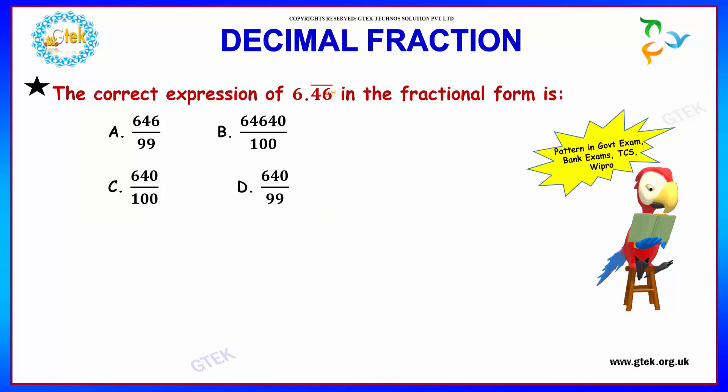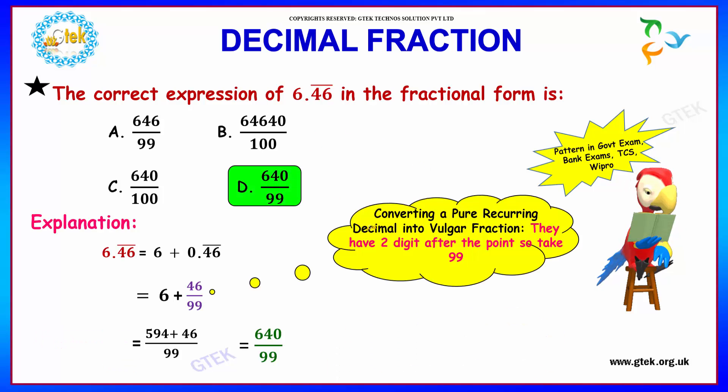If you see, 4.6 in the question is reoccurring. Since 6.4̅6̅ bar is in pure reoccurring form, we have to convert it into vulgar fraction. That is, they have 2 digits after the point.